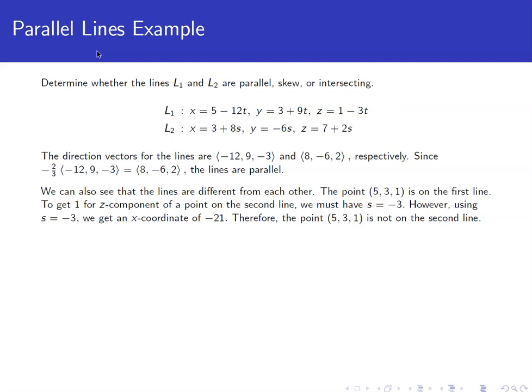Now, if these lines are going to have any hope of being parallel to one another, their direction vectors have to be parallel. So the direction vector for the first line is negative 12, 9, and negative 3.